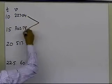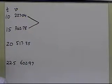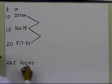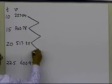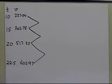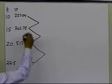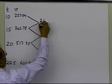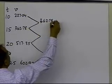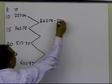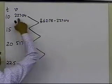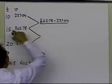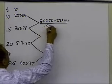I'm going to calculate the first divided difference based on these two points, then the first divided difference between these two points, and the first divided difference between these two points. The first divided difference here will be simply 362.78 minus 227.04, divided by 15 minus 10.